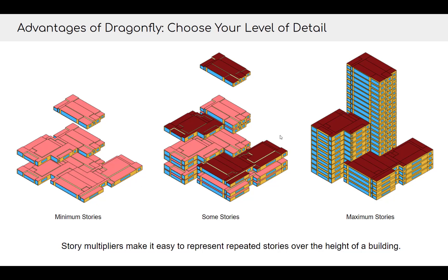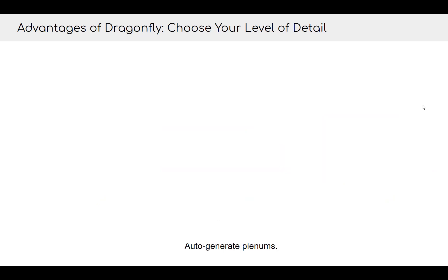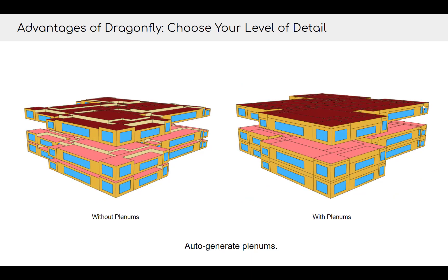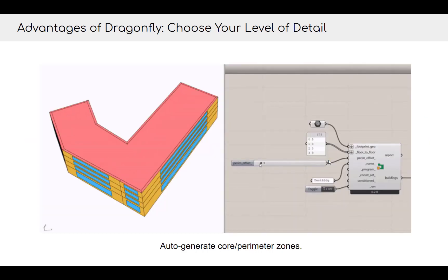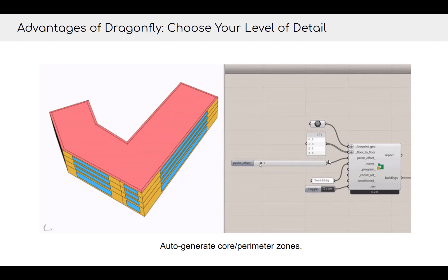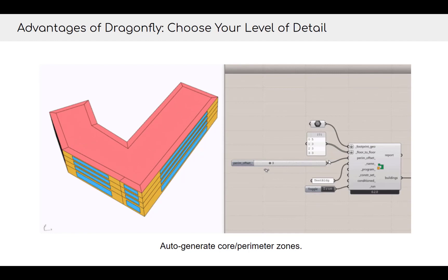So you can choose your level of detail because of the kind of limitations imposed by the Dragonfly schema. Other advantages include the ability to easily auto-generate plenums, because everything's 2D and an extruded floor plate. Also, because everything's an extruded floor plate, we can do things like generating core and perimeter zones very easily — we'll cover this in the first couple of videos — so we can model buildings in a way that's sensitive to different orientations by separating each orientation into a separate zone.